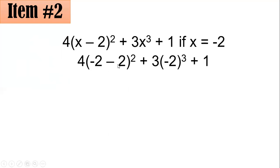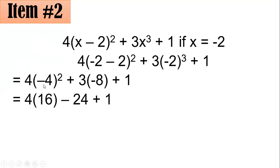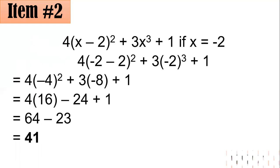Negative 2 minus 2 becomes negative 4, so we have 4 times negative 4 squared plus 3 times negative 2 cubed plus 1. Negative 4 squared is 16. Negative 2 cubed is negative 8, so 3 times negative 8 is negative 24, plus 1. Then 4 times 16 is 64, and negative 24 plus 1 is negative 23. So 64 minus 23 equals 41. Hence, letter C is the correct answer.